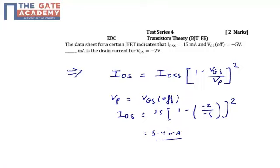We know that the drain current of JFET is related to the gate-to-source voltage as I_DS equals I_DSS times 1 minus V_GS by V_P whole square. V_P is the cutoff voltage.